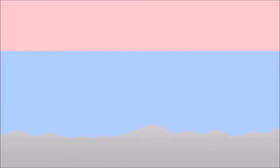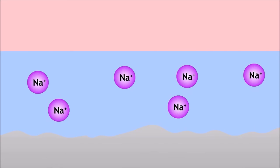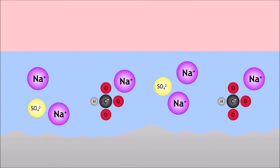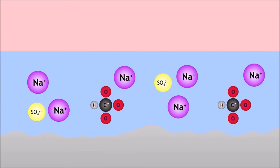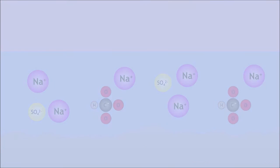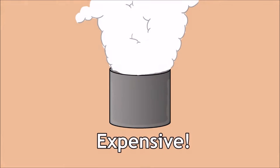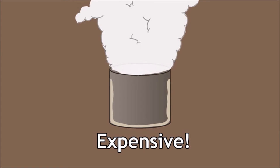Now only the sodium ions remain in solution, balancing the sulphate or hydrogen carbonate that used to be with the calcium. You can remove temporary hardness by boiling the water, as we learnt in the previous unit, but this is expensive and causes lime to deposit on the sides of your container.